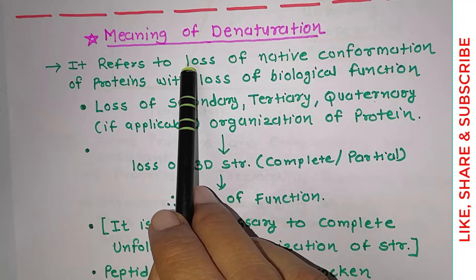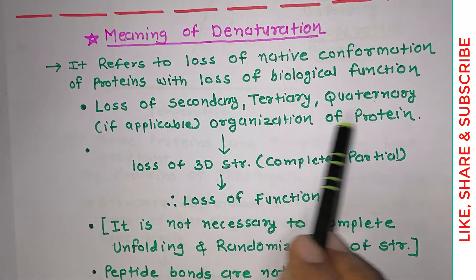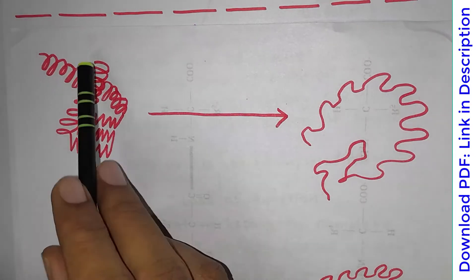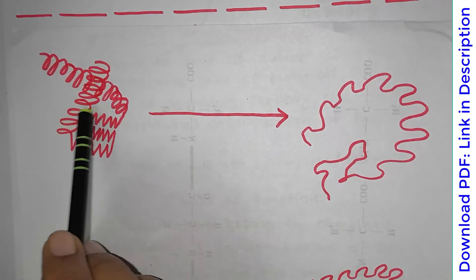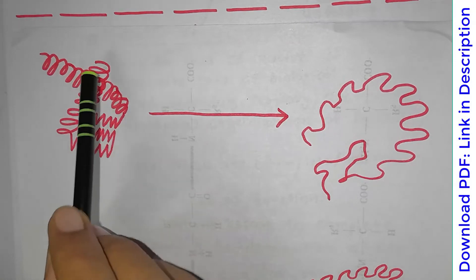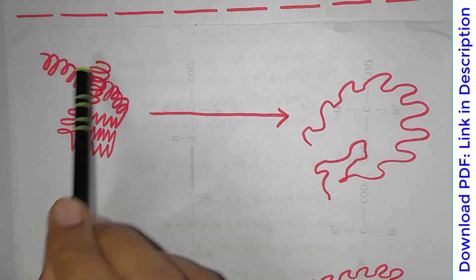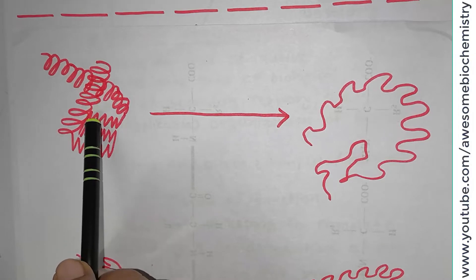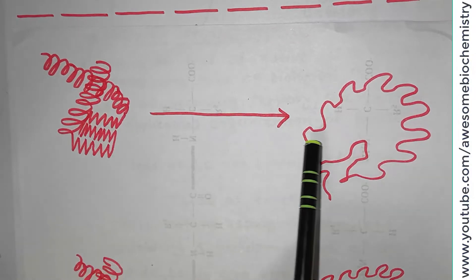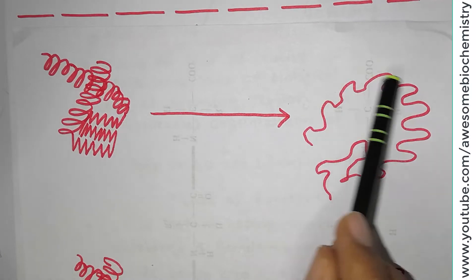The first condition — loss of native conformation of protein — means loss of secondary, tertiary, and quaternary organization of protein. As you can see, this is the tertiary structure of protein, with the secondary structure alpha helix, beta pleated sheet, and once again alpha helix. This secondary structure is further folded to give rise to the three-dimensional functional protein. Once it gets denatured, this tertiary structure as well as secondary structure will be lost. Only primary structure will remain — simply random coils with no secondary or tertiary structure.